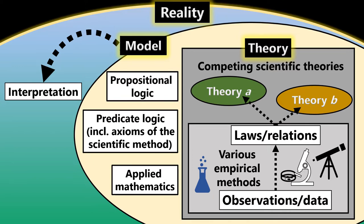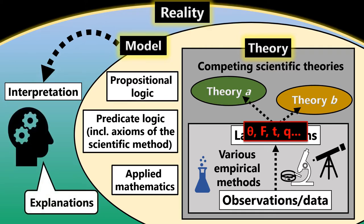When scientists use empirical methods to analyse data, those data are understood and modelled in terms of abstract mathematical properties or relations that are incorporated into scientific laws. Such relations are also the active ingredients in explanations.